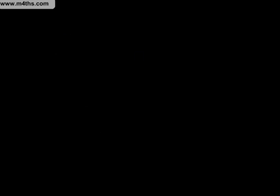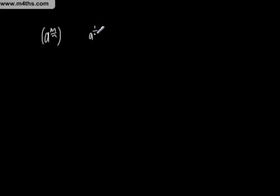Now let's look at this example — this whole idea of a to the m over n. So what we're saying, if we've got a to the m over n, we take the nth root. Another way of looking at this, and I prefer this if we have to have a definition, is that you take the nth root and raise it to the m. I much prefer it in that way.